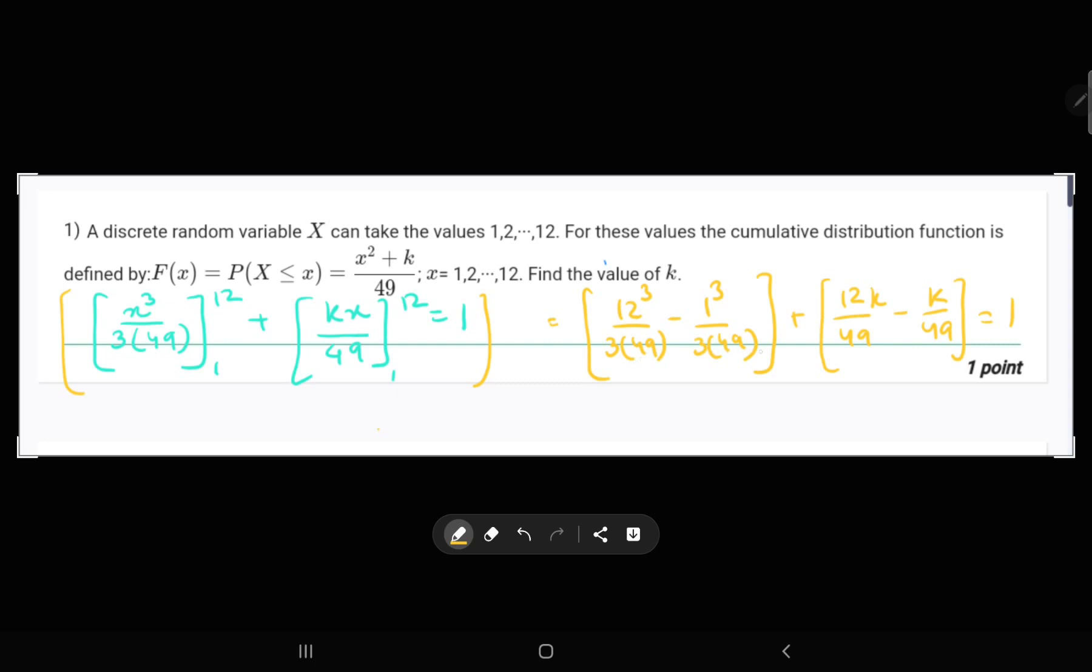Using, I mean, combining all of the 49 terms, we will multiply the whole equation with 49. We will get (12³ - 1)/3 + 11k equals to 49.